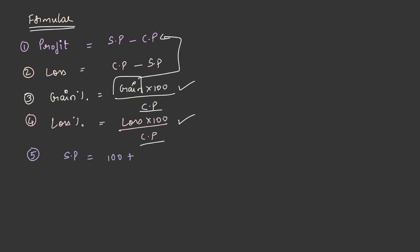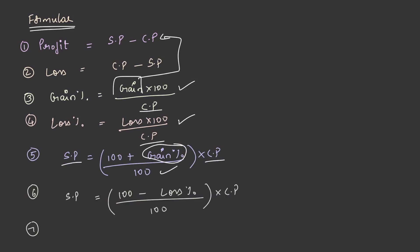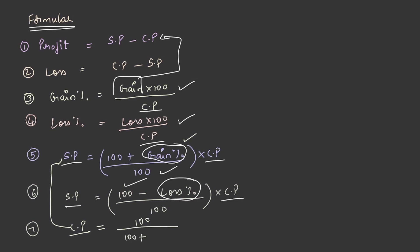The formula for selling price is: (100 + gain percentage) divided by 100, multiplied by cost price. If loss percentage and cost price are known, selling price is: (100 minus loss percentage) divided by 100, multiplied by cost price. For cost price when gain percentage is known: 100 divided by (100 + gain percent), multiplied by selling price — the reciprocal of the selling price formula.